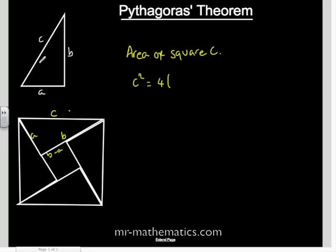Our original triangle, which has got an area of half base times height, in this case half AB, plus the smallest square in the center, which is B minus A all squared.